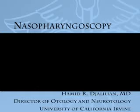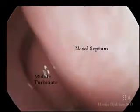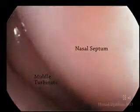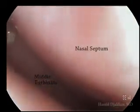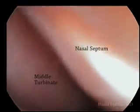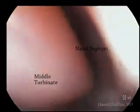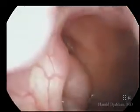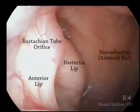Nasopharyngoscopy is generally performed with a 4 mm flexible scope. As we enter the right side of the nose, we see the middle turbinate and the nasal septum. It's generally best to go between the middle turbinate and the inferior turbinate, or immediately medial to the inferior turbinate.